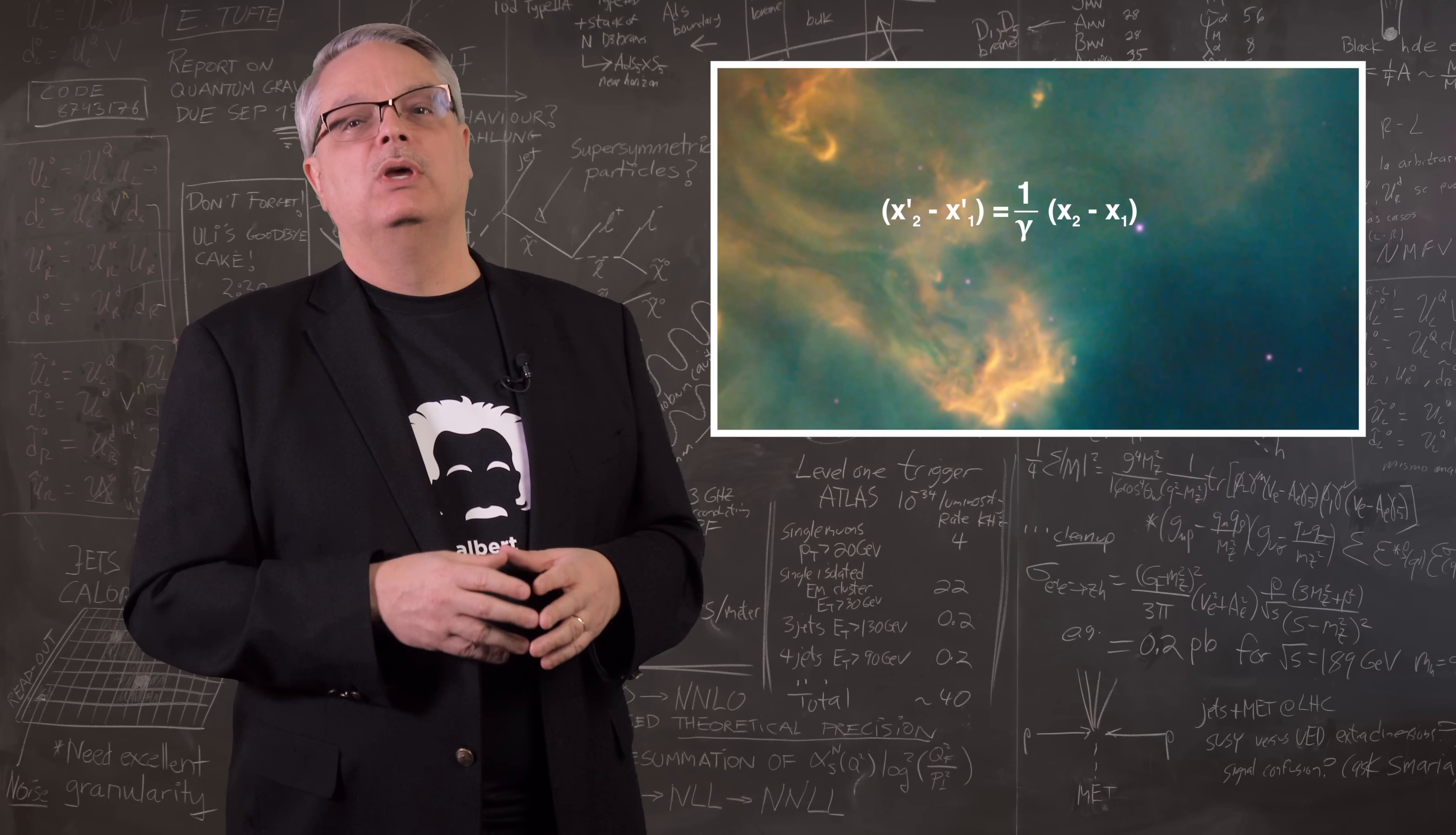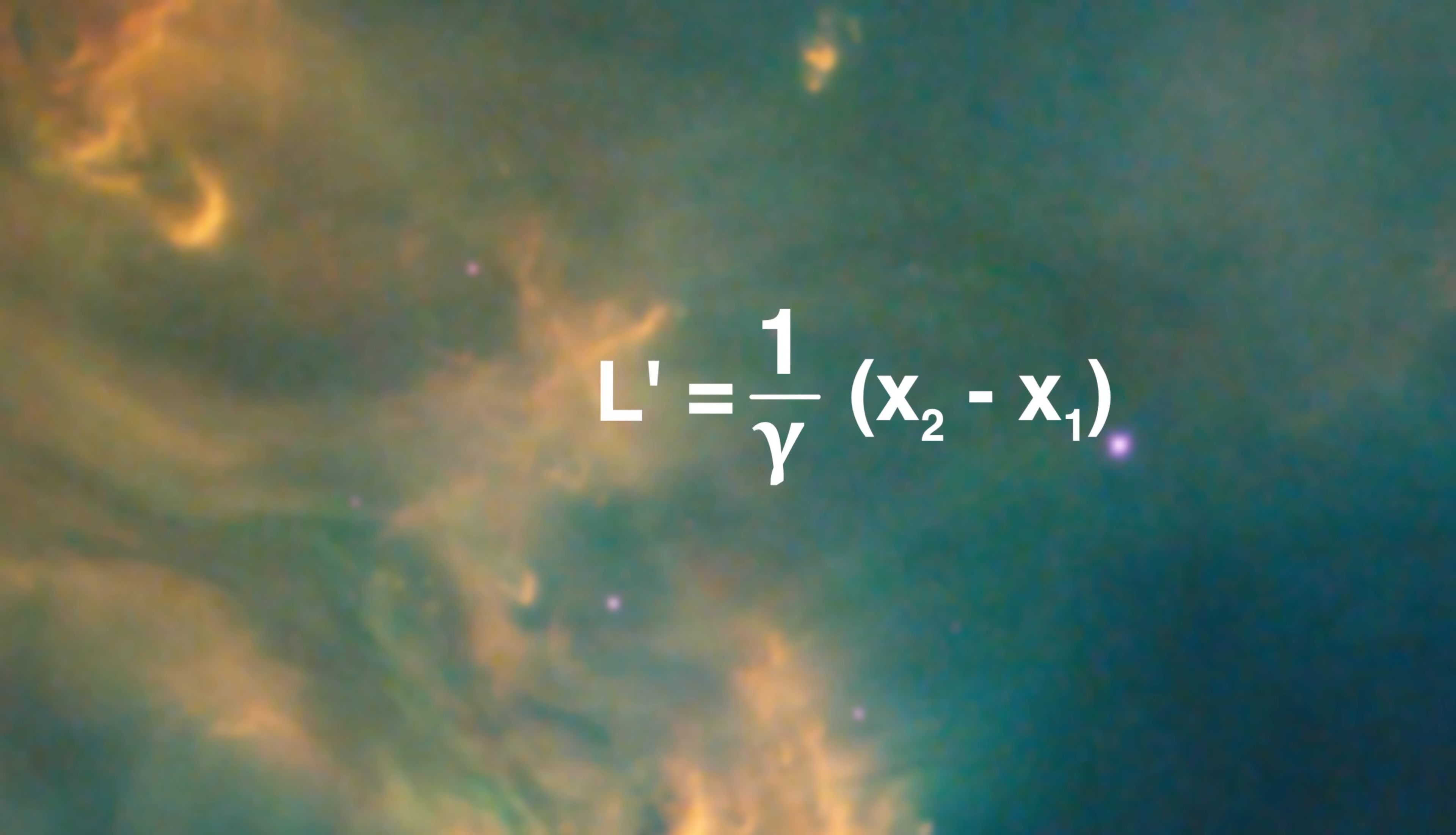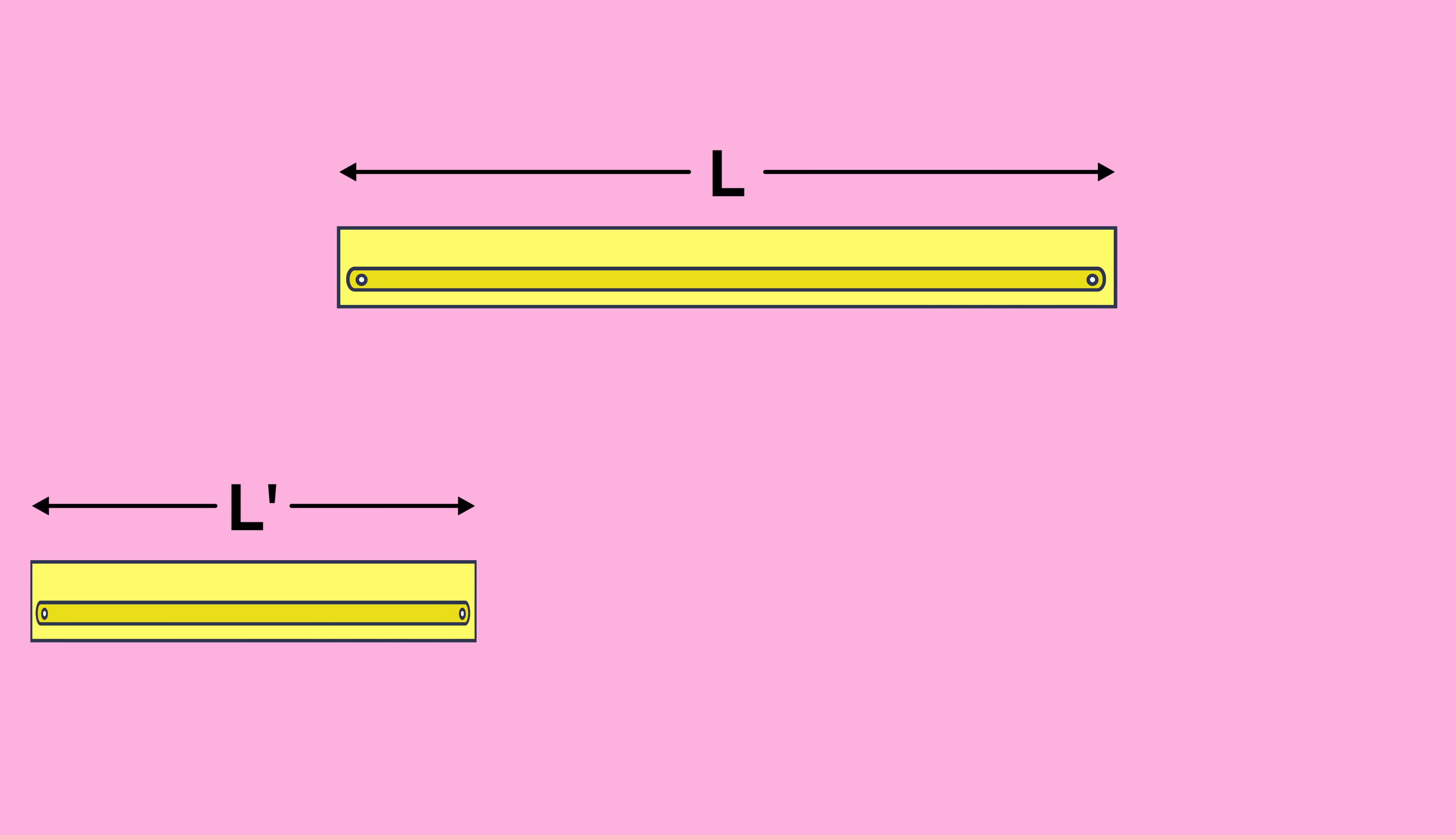And that brings us to the answer. We replace the differences for both the primed and unprimed variables with the L prime and L and what we find is that the length of the stick in the primed frame is the length in the unprimed frame divided by gamma. Since gamma is greater or equal to one, this means that the person who is moving with respect to the stick sees a shorter stick than one who is stationary to it. And using the fact that both observers can claim that they are stationary, this means that a moving stick is shorter than a stationary one.